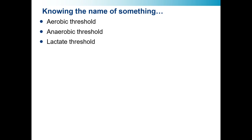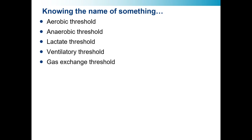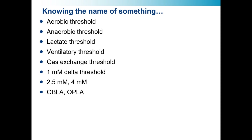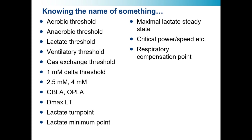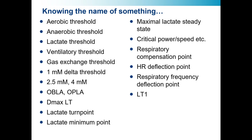So we have: the aerobic threshold, the anaerobic threshold, the lactate threshold, the ventilatory threshold, the gas exchange threshold, the 1 millimolar delta threshold, the 2.5 millimolar and 4 millimolar fixed lactate values, the onset of blood lactate accumulation, the onset of plasma lactate accumulation, the DMAX method and the modified DMAX method, the lactate turn point, the lactate minimum point, the maximal lactate steady state, critical power, critical speed, critical torque, critical force, etc. The respiratory compensation point, the heart rate deflection point, the respiratory frequency deflection point, lactate threshold 1, lactate threshold 2, VT1, VT2, and so on and so forth.